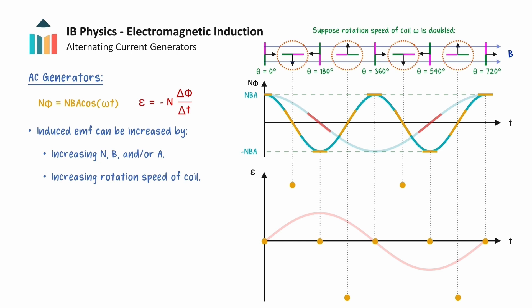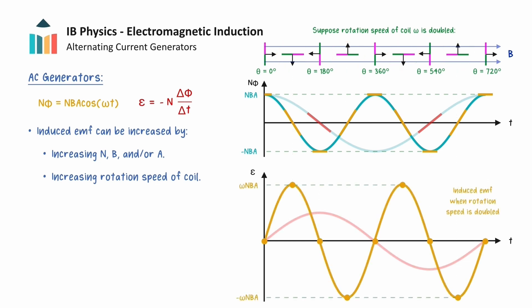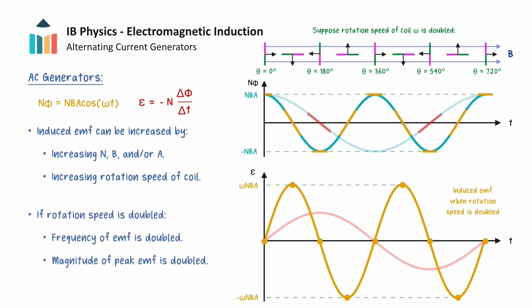The full variation of the induced EMF with time when the rotation speed is doubled is then shown by the yellow line, and this can be compared with the induced EMF graph from before. Notice how both the frequency of the EMF and the magnitude of the peak EMF have doubled with rotation speed. Moreover, if we use the expression obtained earlier for the induced EMF, this further highlights how the rotation speed directly affects both the amplitude of the induced EMF and its frequency.